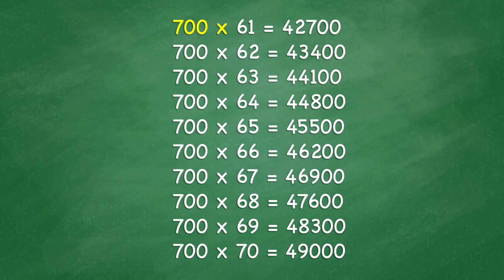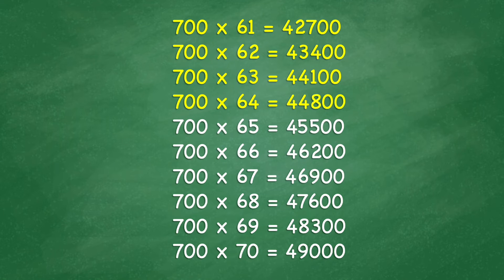700 times 61 equals 42,700. 700 times 62 equals 43,400. 700 times 63 equals 44,100. 700 times 64 equals 44,800. 700 times 65 equals 45,500. 700 times 66 equals 46,200.